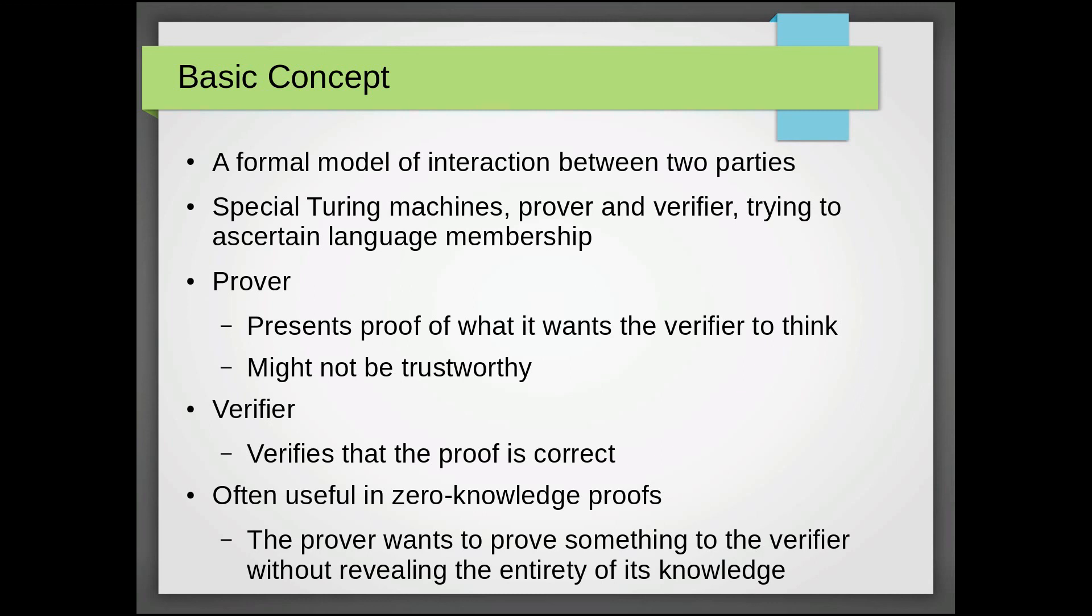So the verifier's job then is to actually verify that this proof is correct. This kind of interaction is often useful in zero-knowledge proofs, where the prover wants to convince the verifier of something without actually revealing all of its knowledge, just some of it.